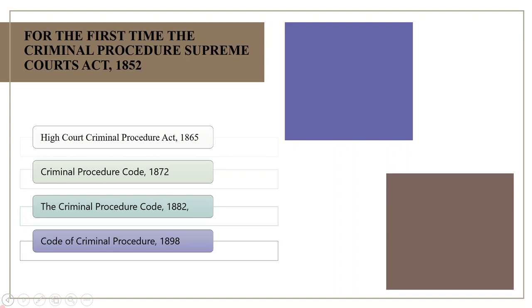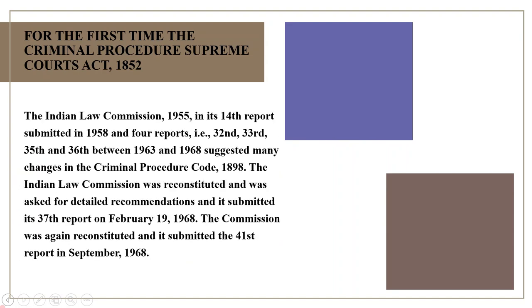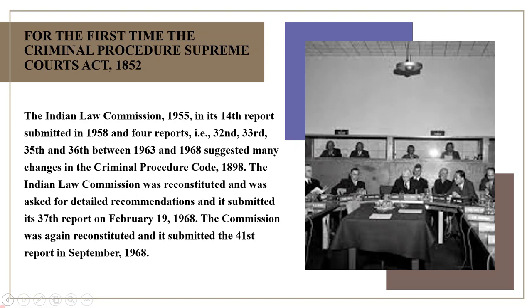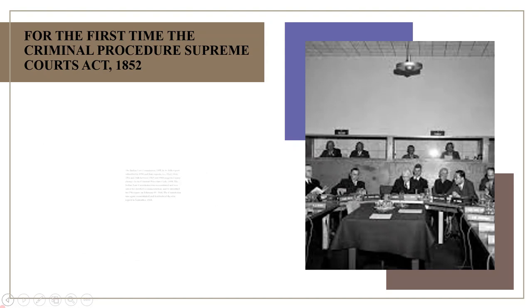The amendments passed especially in 1923 and 1955 aimed at simplifying the procedure and speeding up the criminal trial. The Indian Law Commission 1955 in its 14th report submitted in 1958, and four reports — the 32nd, 33rd, 35th and 36th — between 1963 and 1968 suggested many changes in the Criminal Procedure Code 1898. The Commission was reconstituted and submitted its 37th report on February 19, 1968, and again its 41st report in September 1968. Based on these recommendations, a draft bill was introduced in Rajya Sabha in 1970 and finally enacted by Parliament as the Code of Criminal Procedure 1973, Act No. 2 of 1974.